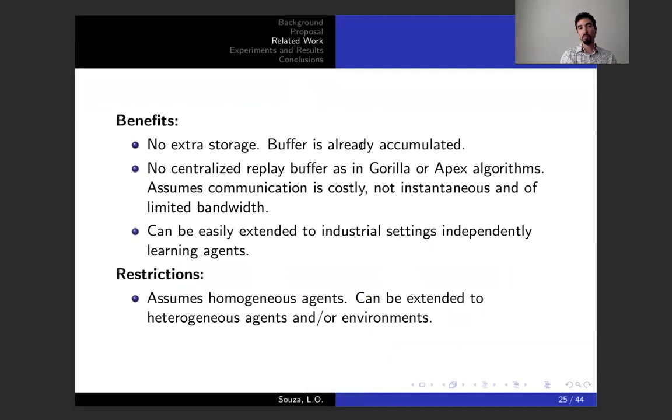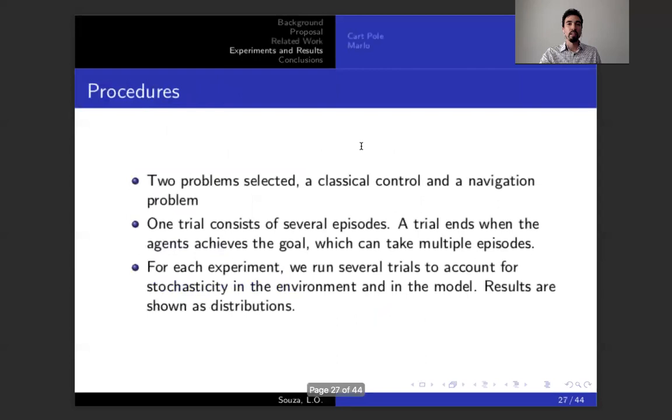The benefits of our work is that there is no extra storage since the buffer is already accumulated in DQN. We don't have the centralized replay buffers in Gorilla or Apex. We assume that communication is costly, it's not instantaneous, and it's of limited bandwidth. This could be easily extended to industrial settings which are composed of independently learning agents. The restrictions—the work as it is now assumes agents are homogeneous and the environment is also the same, but this could be extended to heterogeneous agents or environments.